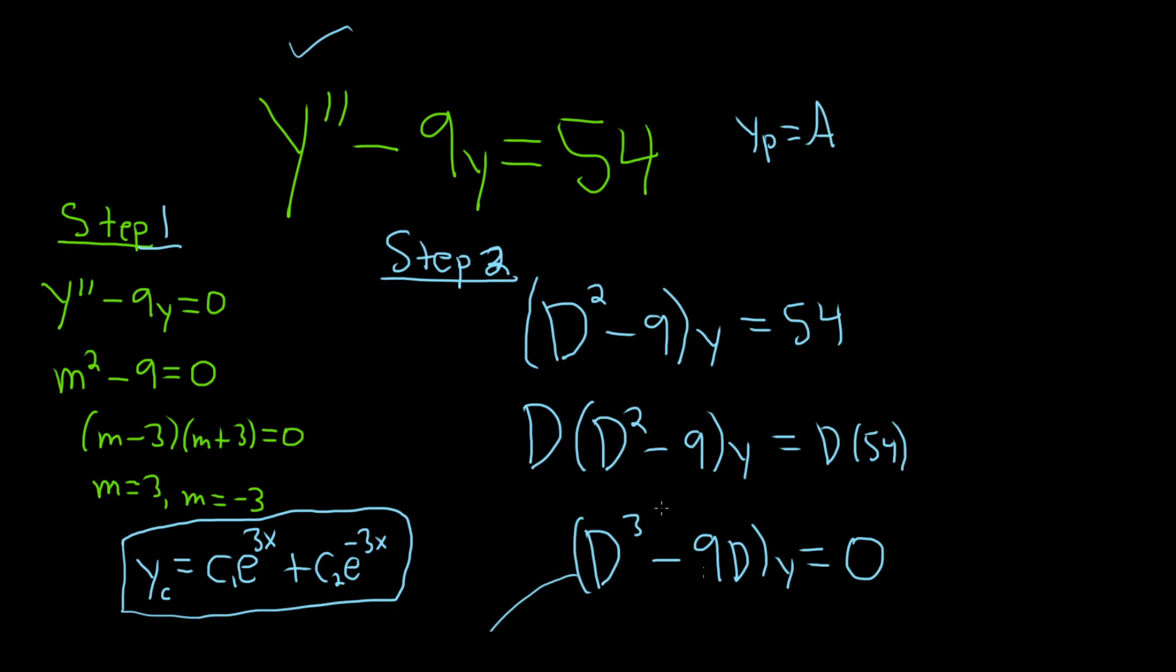So we have yp. In order to find it, we need to differentiate it and plug it into this DE. So the derivative of yp is 0. And the derivative, again, is 0. So plugging it into this DE, we have y double prime, so that's 0, minus 9, and then y, that's a. And that's equal to 54.